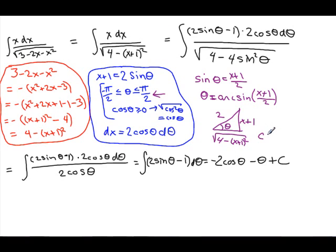So what's cosine theta then? Cosine theta is going to be adjacent over hypotenuse, so that square root over 2. So it's going to be 1 half square root 4 minus x plus 1 squared. And so let's box this off, make sure it stays out of our way.